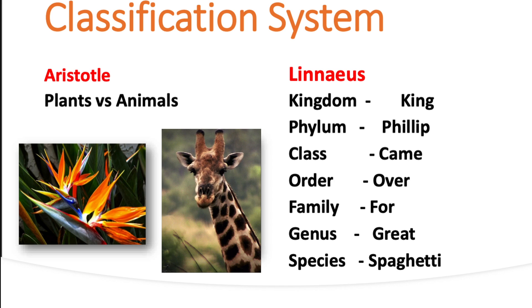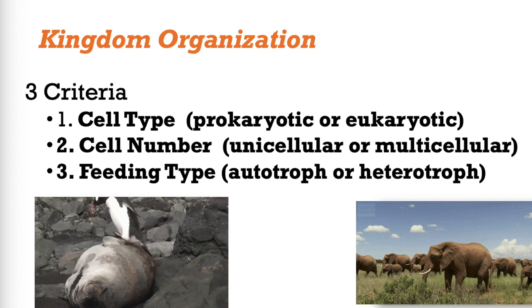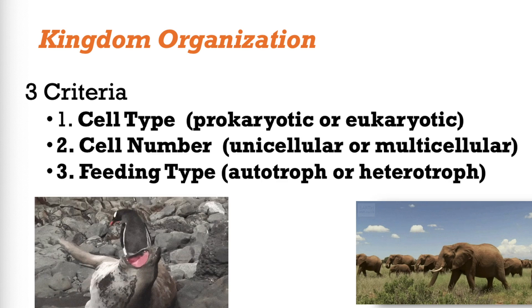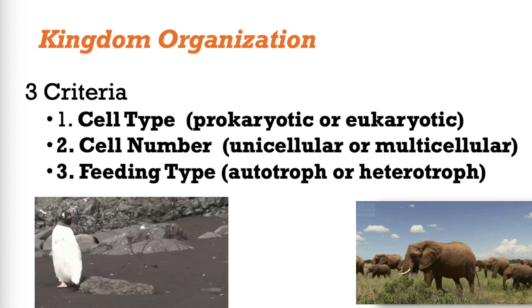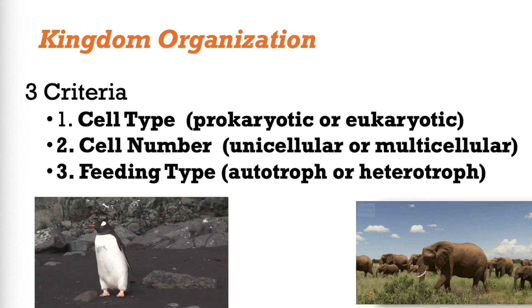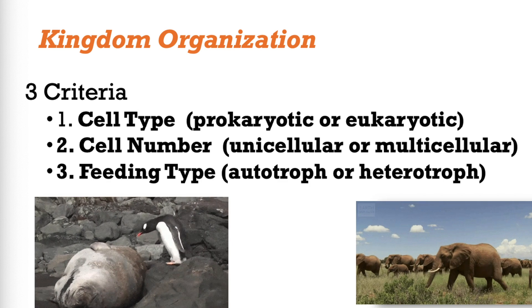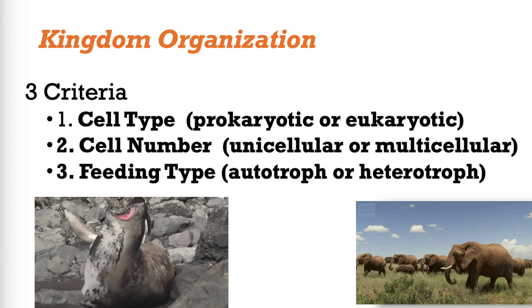Remember, Carlos Linnaeus, the father of taxonomy, came up with the hierarchical system to classify living organisms into kingdom, phylum, class, order, family, genus, and species. The criteria we're going to focus on today, specifically at the kingdom organizational level, are three things that help identify if an organism is alive.